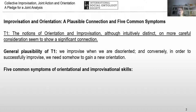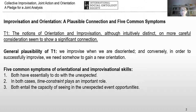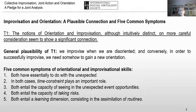Common symptoms of orientation and improvisational schemes. Here I refer to the analysis of orientation formulated by Werner Stegmayer in his recent monography on this subject. First, both orientation and improvisation essentially have to do with the unexpected. In both cases, constraint plays an important role. Both entail the capacity of seeing unexpected events as opportunities, both entail the capacity of taking risks, and both entail a learning dimension consisting in the assimilation of routines.